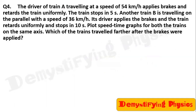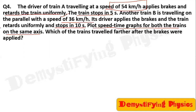Question four: the driver of train A, traveling at 54 kilometers per hour, applies brakes and retards the train uniformly — the train stops in 5 seconds. Another train B is traveling in parallel at 36 kilometers per hour; its driver applies brakes and the train retards uniformly and stops in 10 seconds. Plot speed-time graphs for both trains on the same axis.